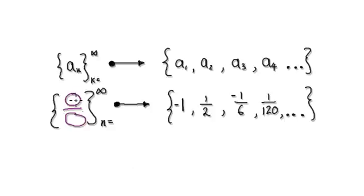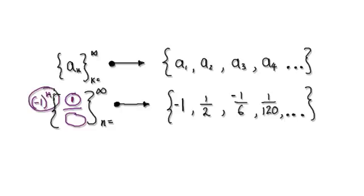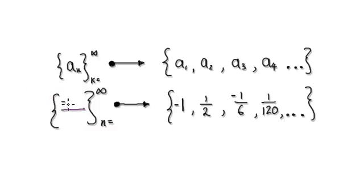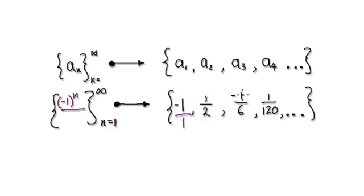We know the answer is a fraction, we know the numerator generates 1 regardless of n, and to create the alternating sign we do (-1)^n. So (-1)^n times 1 means the numerator is simply (-1)^n — generating -1 when n is 1, +1 when n is 2, -1 when n is 3, and so on.